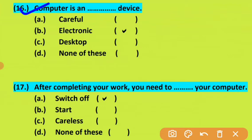Careful hai; electronic, yani ki light se chalti hai or chargeable battery se chalti hai; desktop, yani ki aapki desktop device hai; ya none of these. So option B is correct — computer is an electronic device.